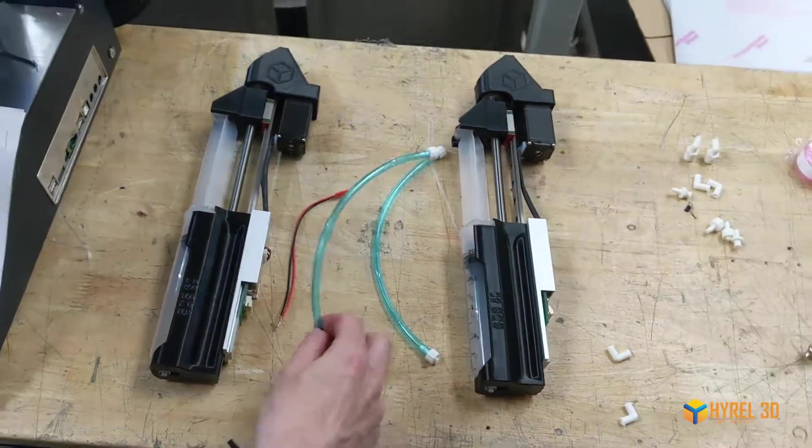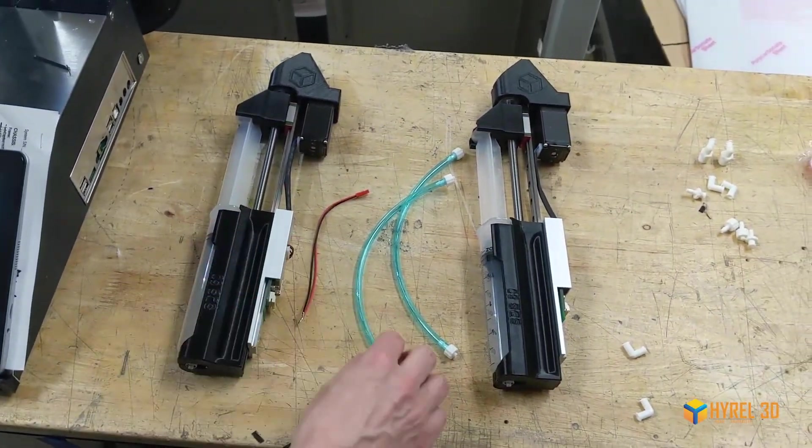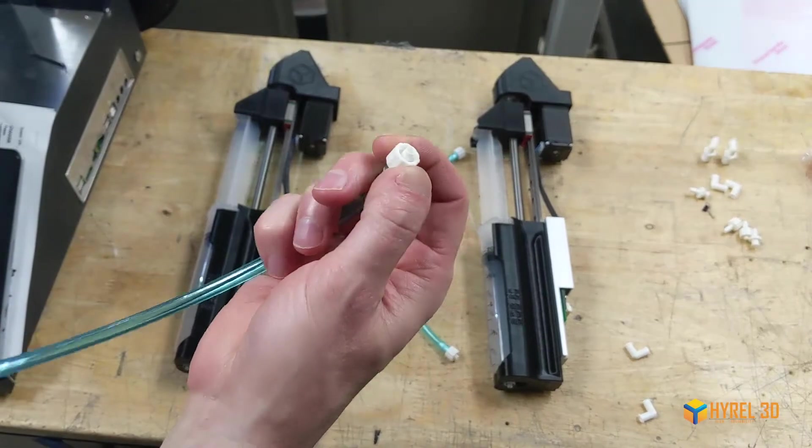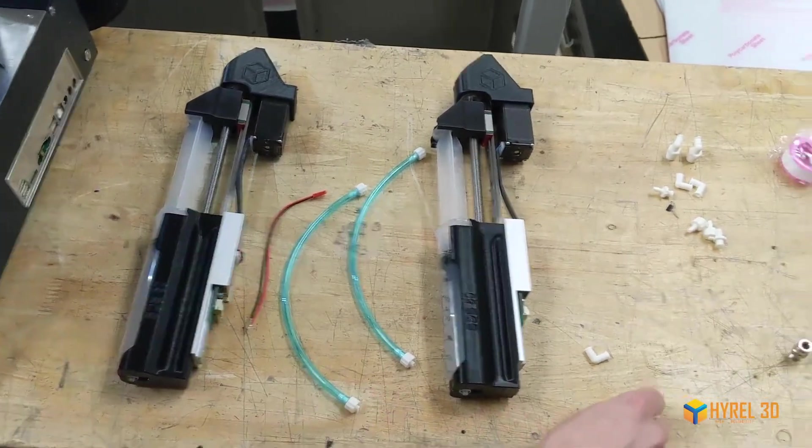Here are two SDS heads along with the required parts to attach them to the Dynamic Mixing Head. This includes the tubing and the lure adapters.